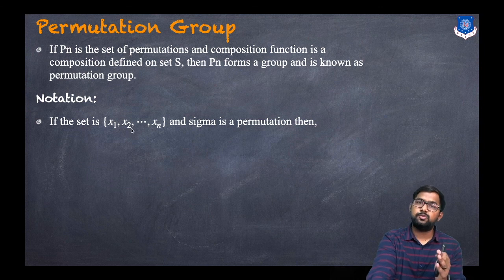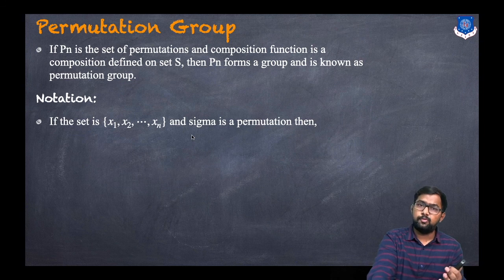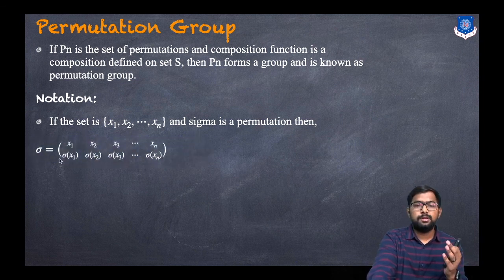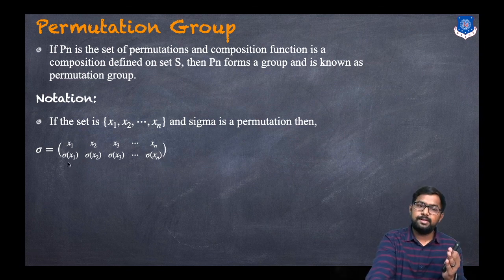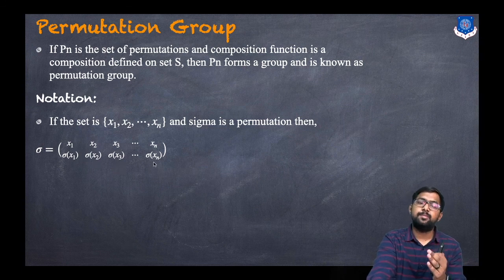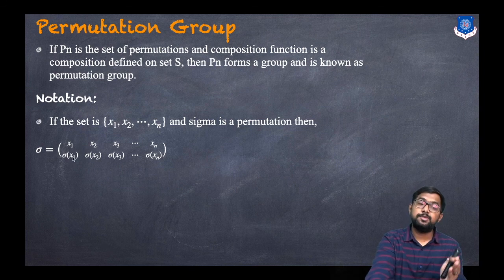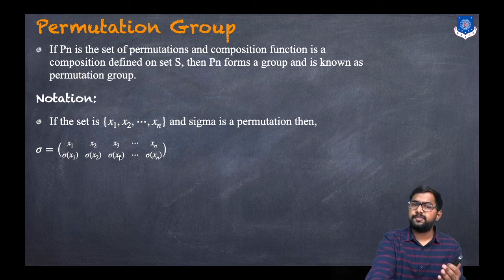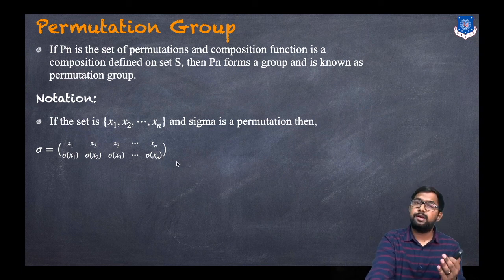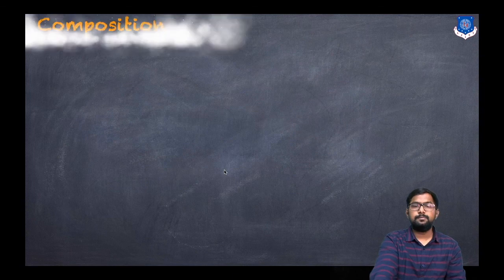What are the notations for a permutation? If we have the set S = {x1, x2, ..., xn} and sigma denotes a permutation, then we write sigma as the two-row bracket notation: x1 over sigma(x1), x2 over sigma(x2), x3 over sigma(x3), up to xn over sigma(xn). This represents the image of each element under the permutation.